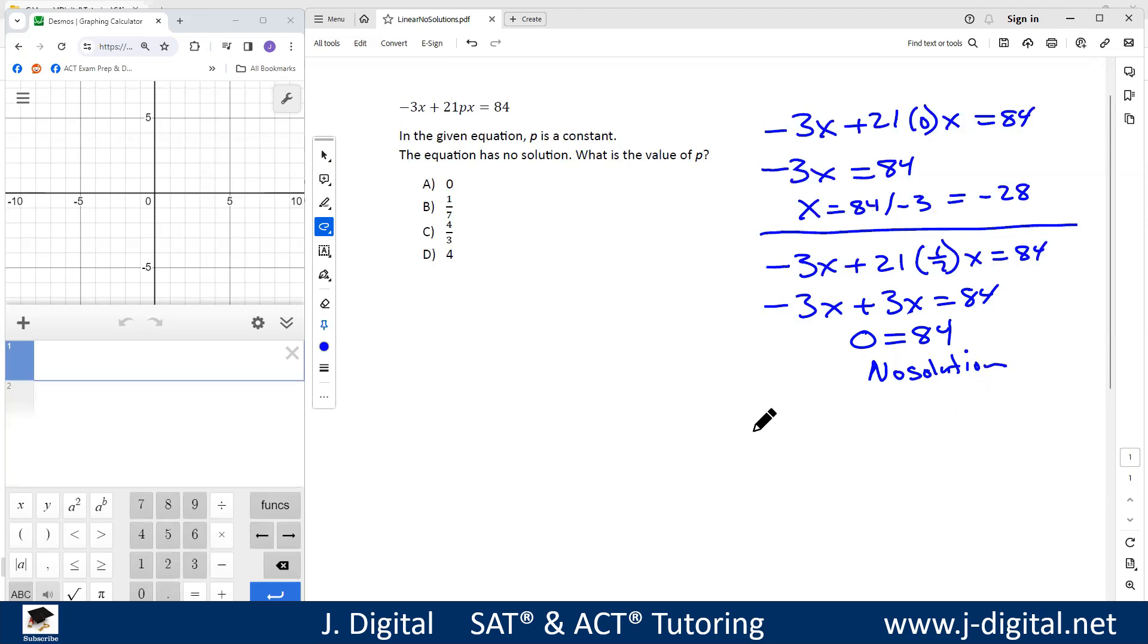If you plug in the other ones, 4/3 and 4, you get some values for those. If you do the 4/3, you end up with a decimal 3.36. If you plug in 4 for p, you end up with 1.037.